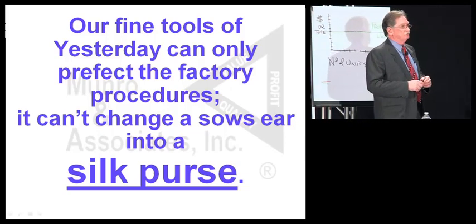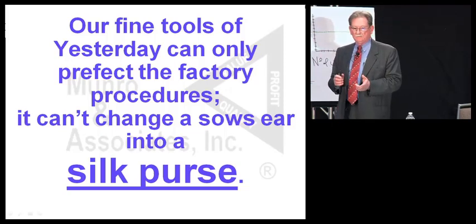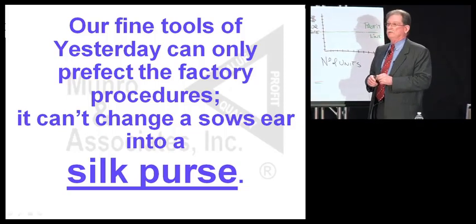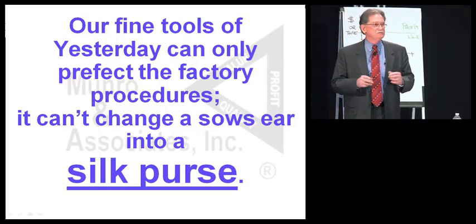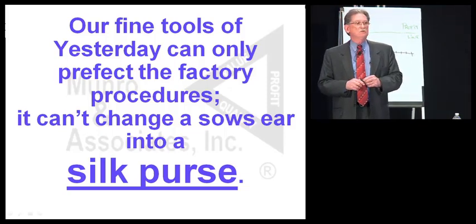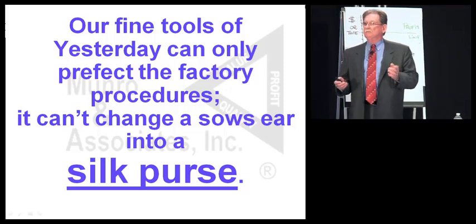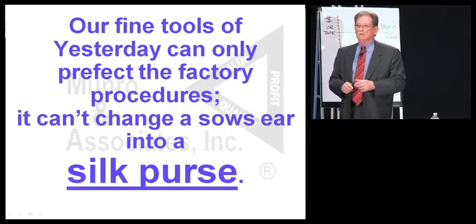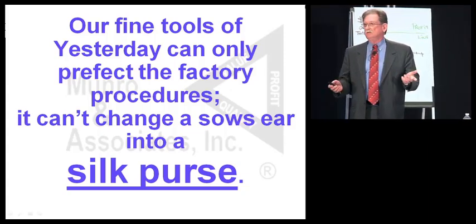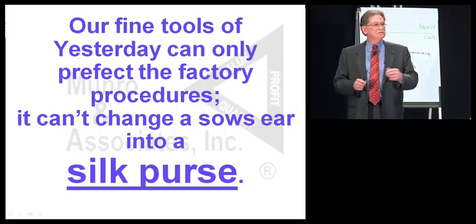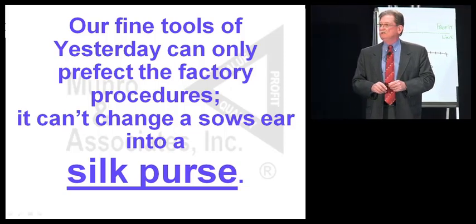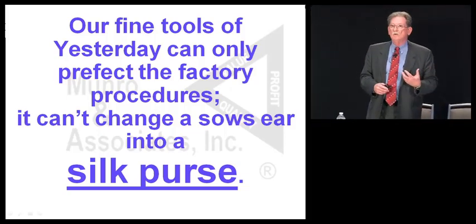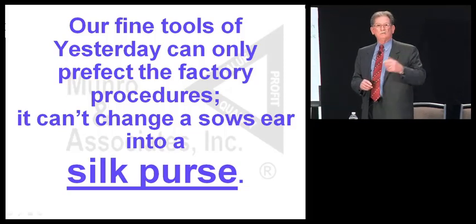We've got a lot of fine tools from yesterday — we use them all. The problem is that perfecting the factory using perfection processes isn't going to turn a sow's ear into a silk purse. The thrust for this presentation is to look at what manufacturing can do to drive product. In the past, we accepted what we got — that's how we figured we should do the job. Well, that isn't going to work if you're going to survive in tomorrow's economy. Monroe is an international company, and that's not how they're doing it in the rest of the world. That may be one of the reasons why manufacturing is leaving this country at a pretty ferocious rate.